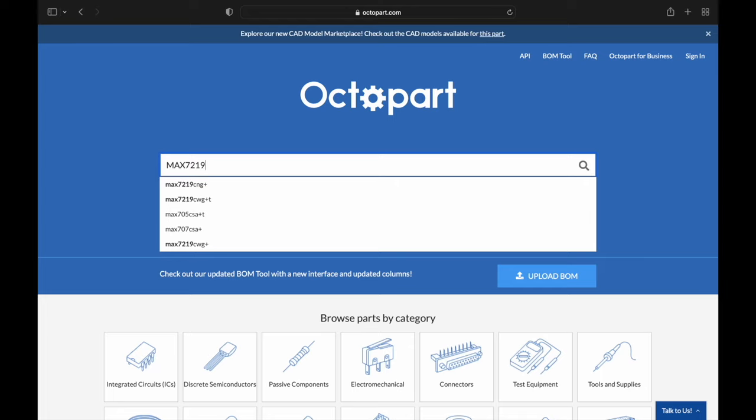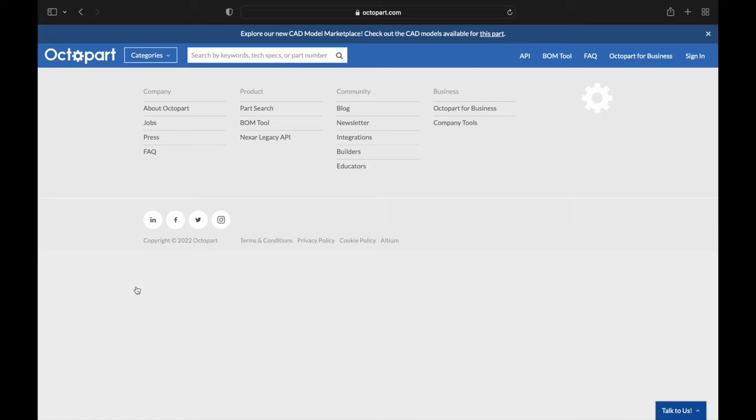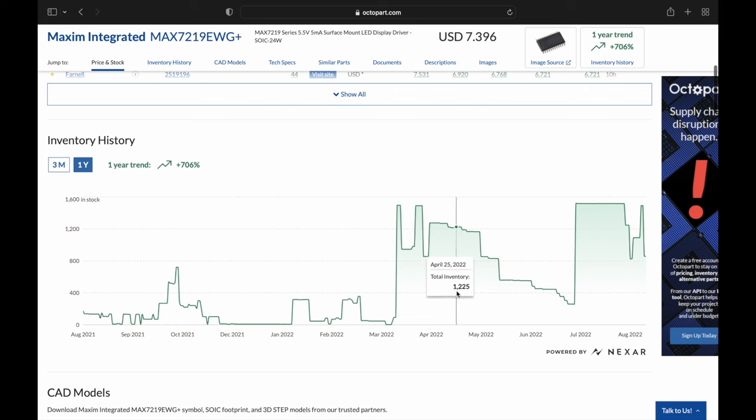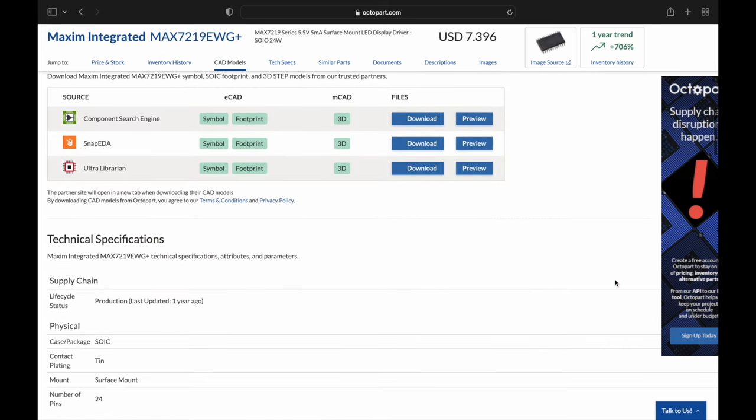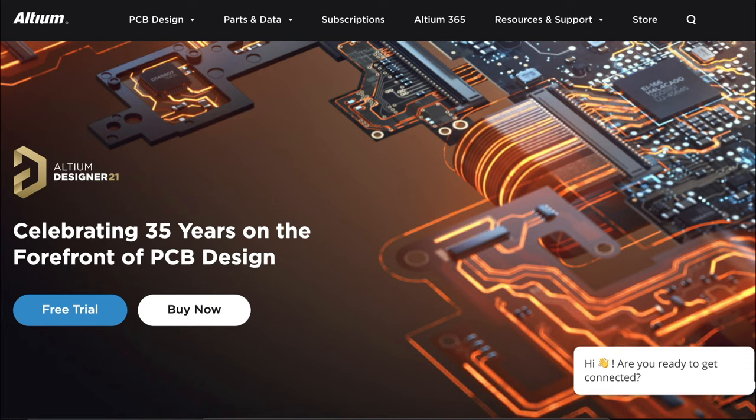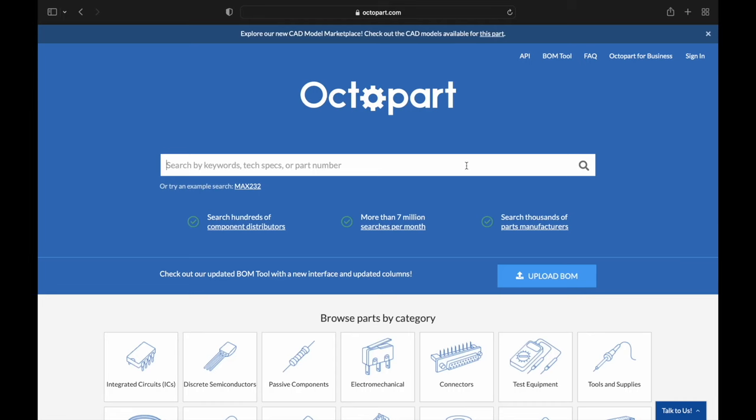And with Octopart linked with Altium you can get real-time insights and the data of all the components. It's a fast search engine for electronic components and you can find each minute detail of the components in it. Links for the free trial Altium Designer, Altium 365, and Octopart is in the description below so you can check it out.